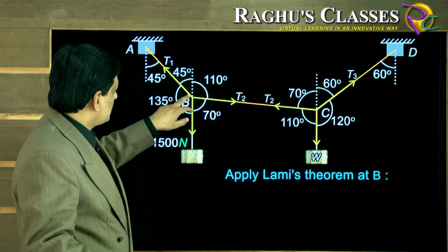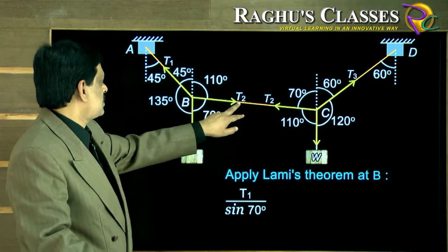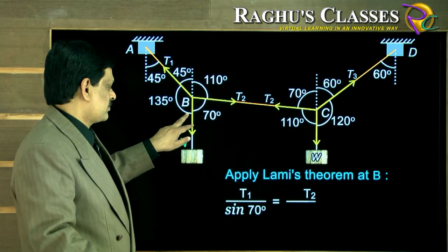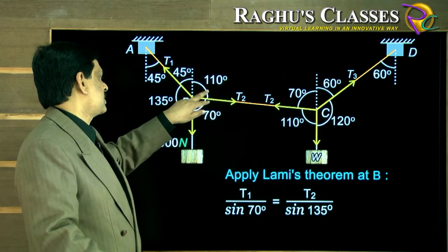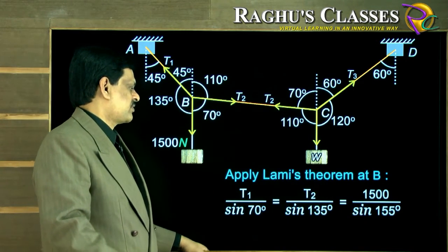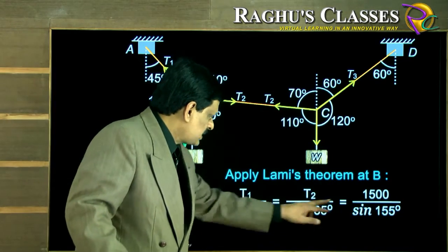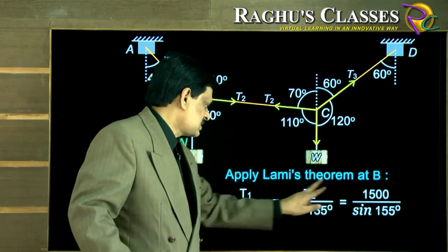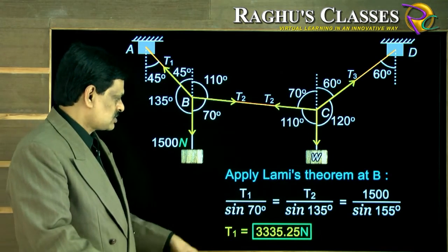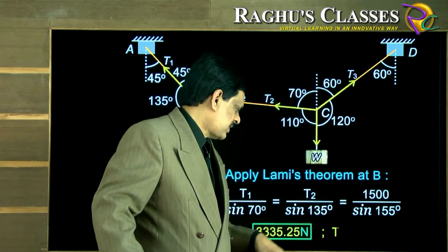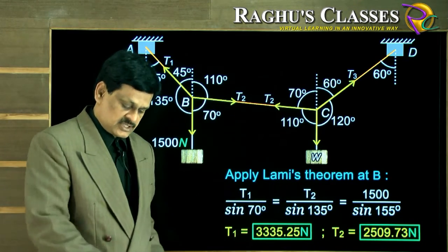So here, T1 upon sine of opposite angle 70 is equal to T2 upon sine of opposite angle 150 is equal to 1500 upon sine of opposite angle 110 plus 45, that is 155. So this is the relation. And of course, you know here both are known, so take the first and the last and equate, you will be getting T1 value approximately that much. And equate this and this and simplify, you get T2 value. So if you solve it, whatever value you get is the right answer.